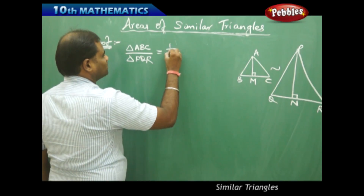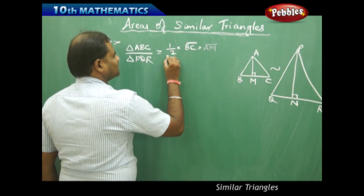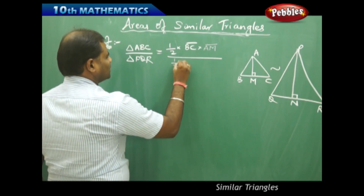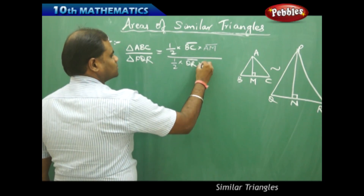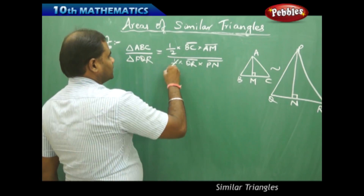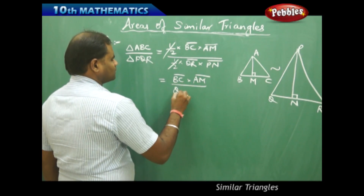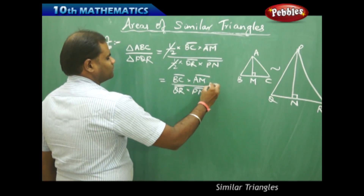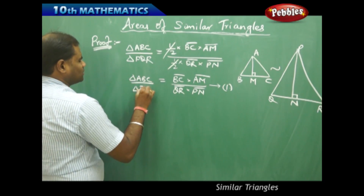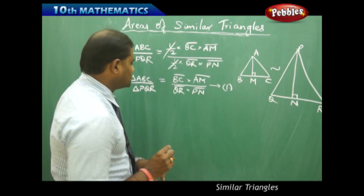We know the area of a triangle is half times base times height. Area of triangle ABC equals half times BC times AM, and area of triangle PQR equals half times QR times PN. Cancelling the half on both sides, we get: area of triangle ABC / area of triangle PQR = (BC × AM) / (QR × PN). Call this equation 1.